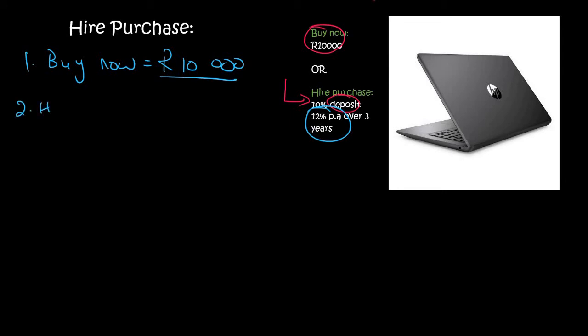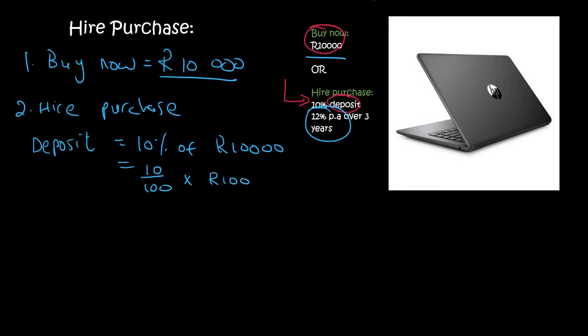If we use the hire purchase option, then it works like this. You pay the shop owner a small amount, which we call a deposit, and that's going to be 10%. 10% of what? Well, 10% of the original amount. So 10% of 10,000. If you wanted to work that out, you'd say 10 over 100 times 10,000. And that's going to give you 1,000 Rand.